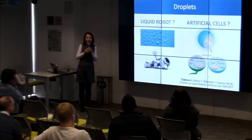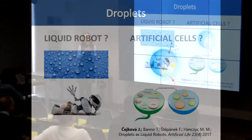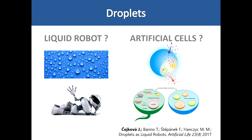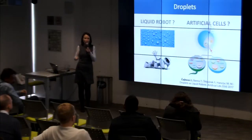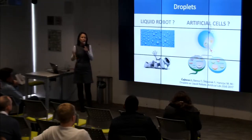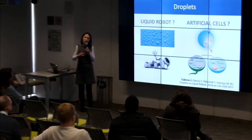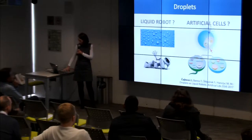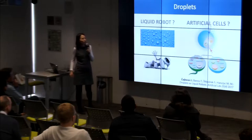The main idea is to have liquid robots that are something like living cells. Each of you knows that a living cell is able to move in the environment either actively or passively, absorb molecules, and perform chemical reactions. Our idea is to have a totally artificial system that will behave in some ways like living cells. We took the inspiration from nature.